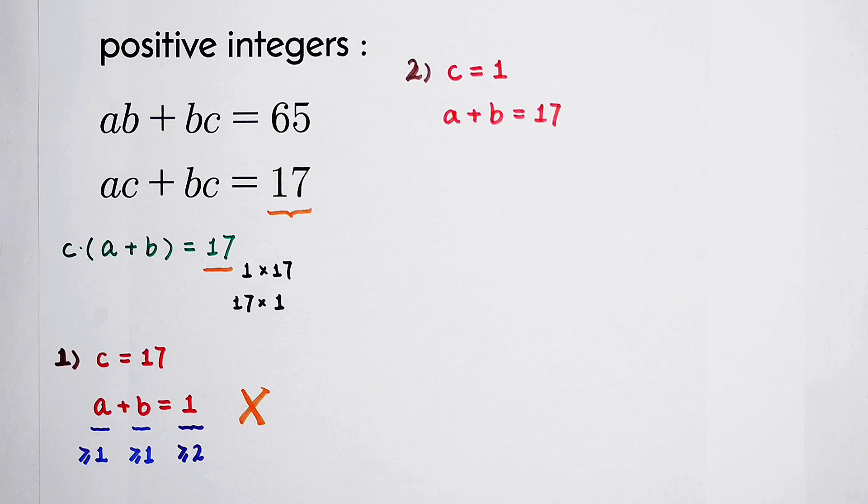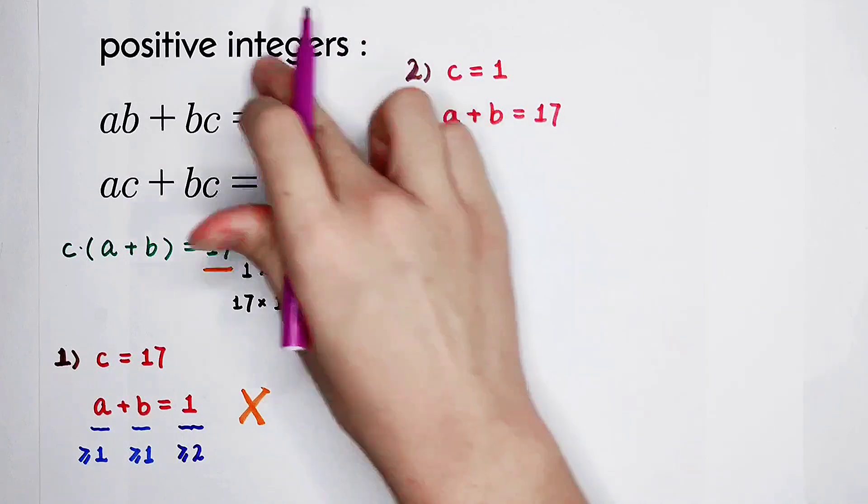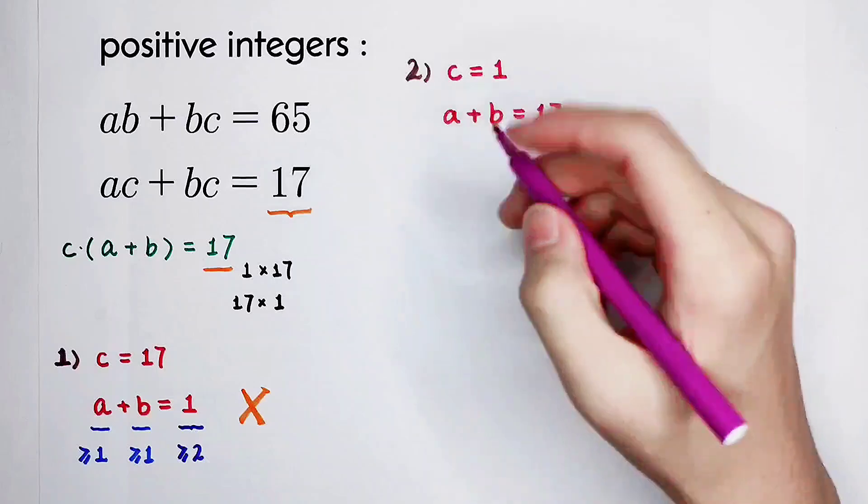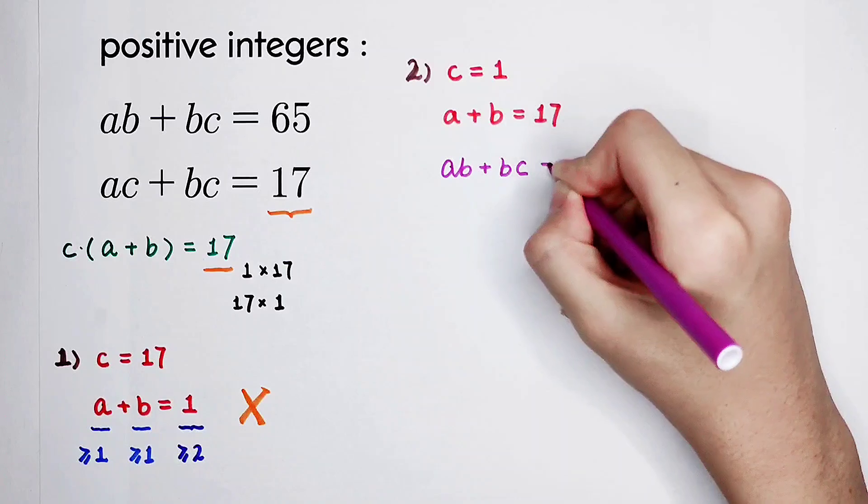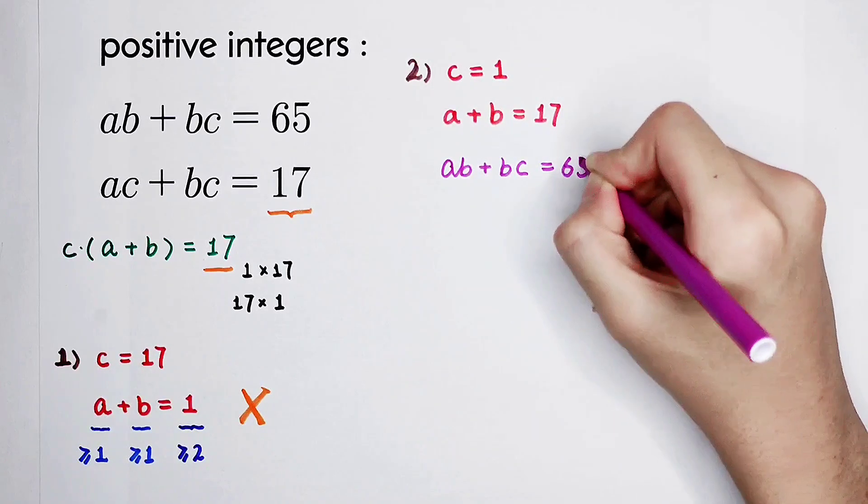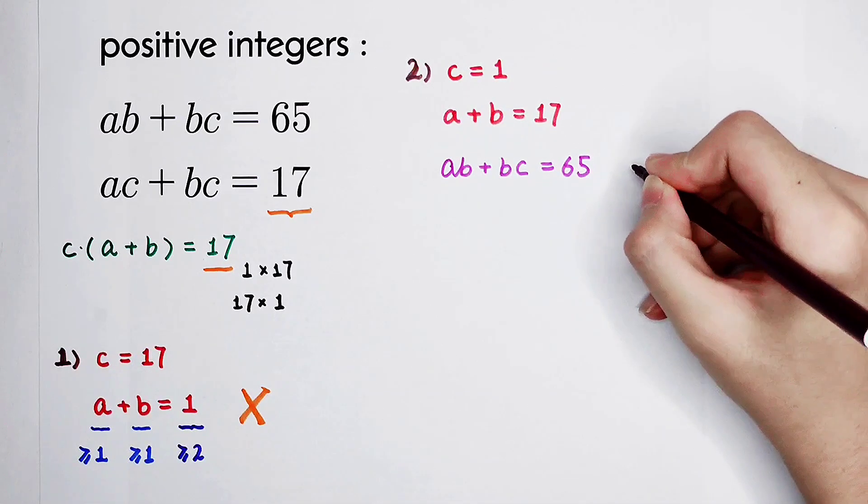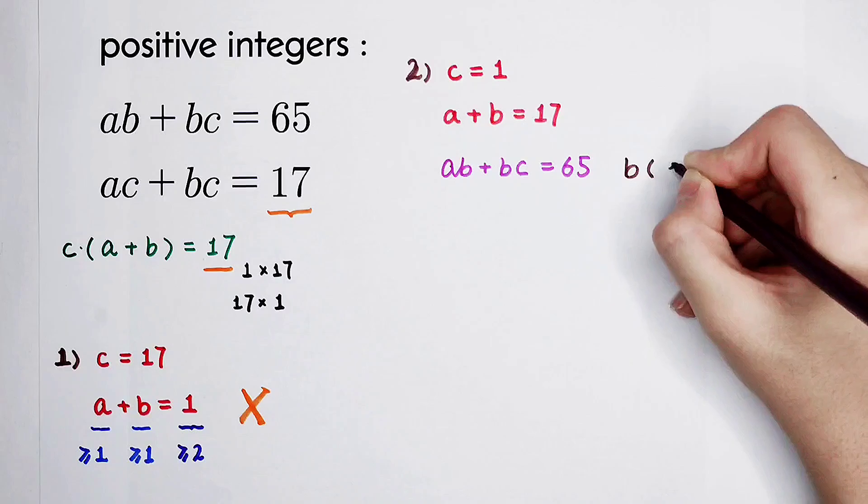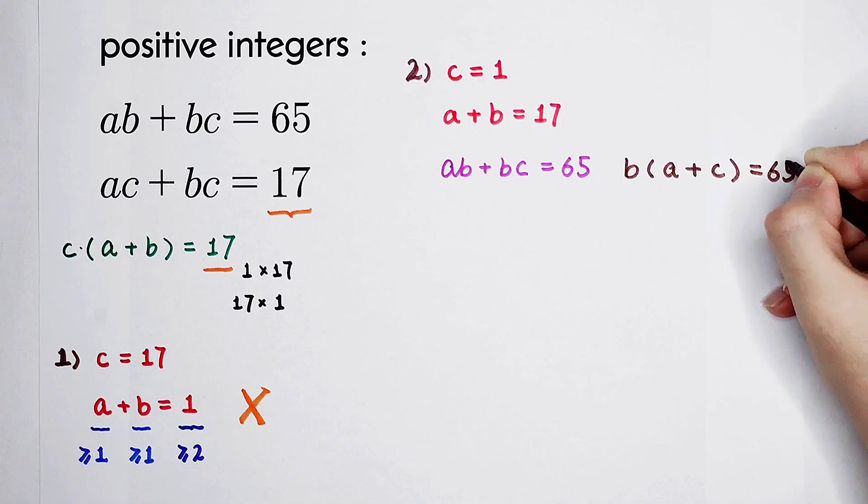I'm sure that there are solutions. And how to solve them. Now, we should use the first equation. ab plus bc is equal to 65. And what should we do? We should take out b.